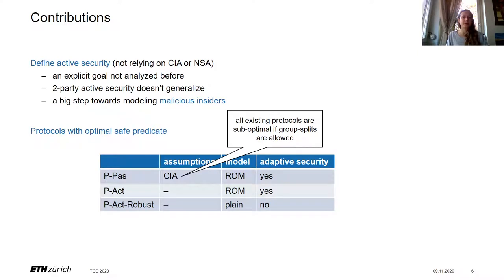For the second contribution, we propose a couple of protocols which achieve the optimal safe predicate, meaning every epoch that can be protected given correctness is actually protected. The first protocol is for the passive setting, which assumes CAA. Interestingly, all existing solutions are suboptimal and we had to do something else. The latter two protocols are for the active setting, where the last one achieves more robustness or better agreement properties. The plan for the rest of the talk is to explain how we talk about active security of CGKA, then discuss the optimal safe predicate and the techniques used in our protocols.